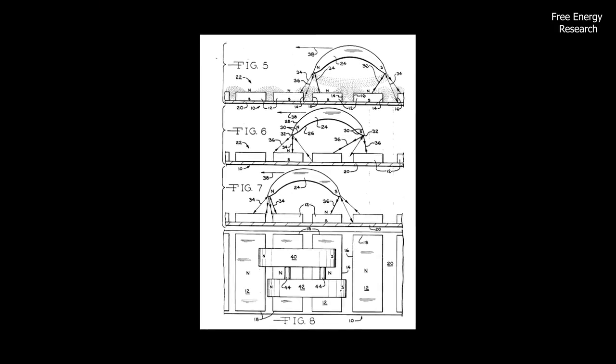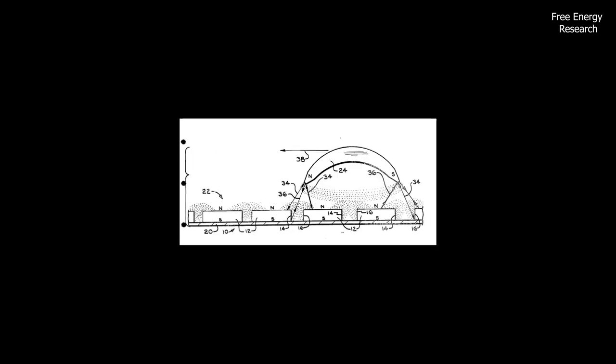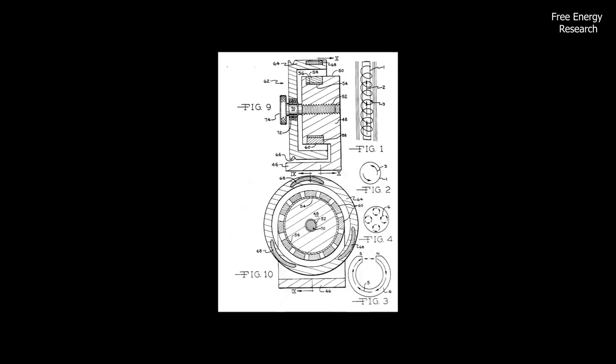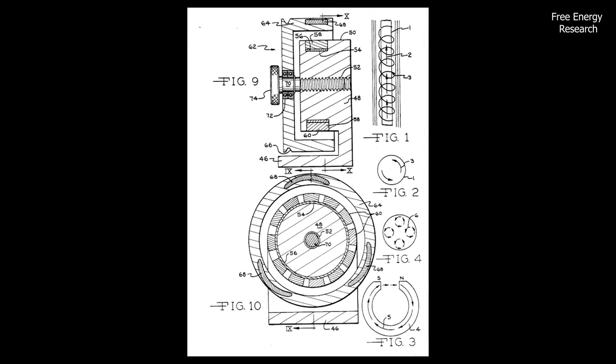Johnson's motor design incorporated a unique arrangement of magnets, which he claimed could produce more energy than it consumed, violating the principles of thermodynamics. This assertion generated considerable interest and controversy within the scientific community.